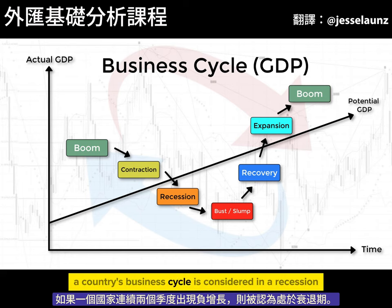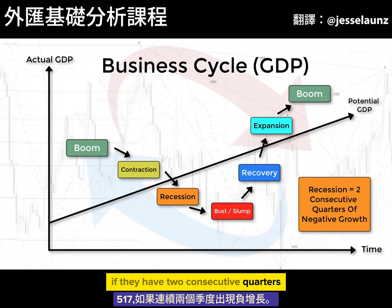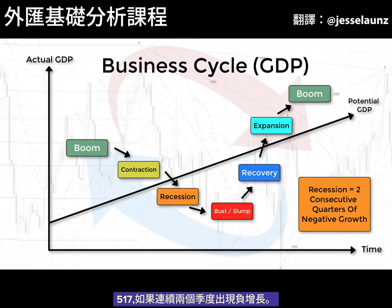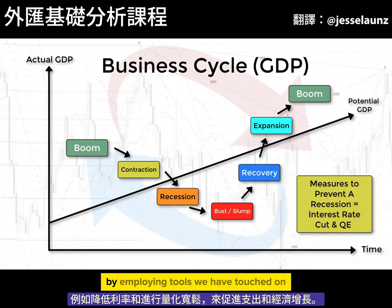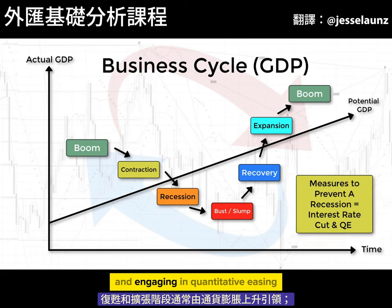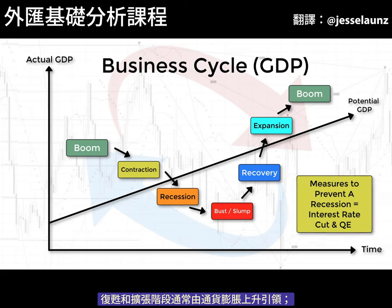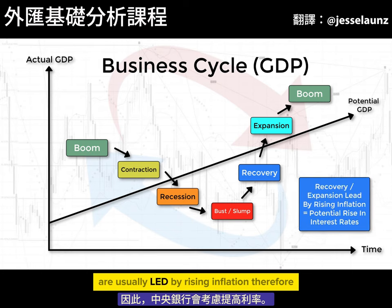A country's business cycle is considered in a recession if they have two consecutive quarters of negative growth. In the contraction phase, central banks will look to prevent a recession by employing tools like lowering interest rates and engaging in quantitative easing to boost spending and economic growth. Recovery and expansion phases are usually led by rising inflation, and therefore central banks will contemplate raising interest rates.